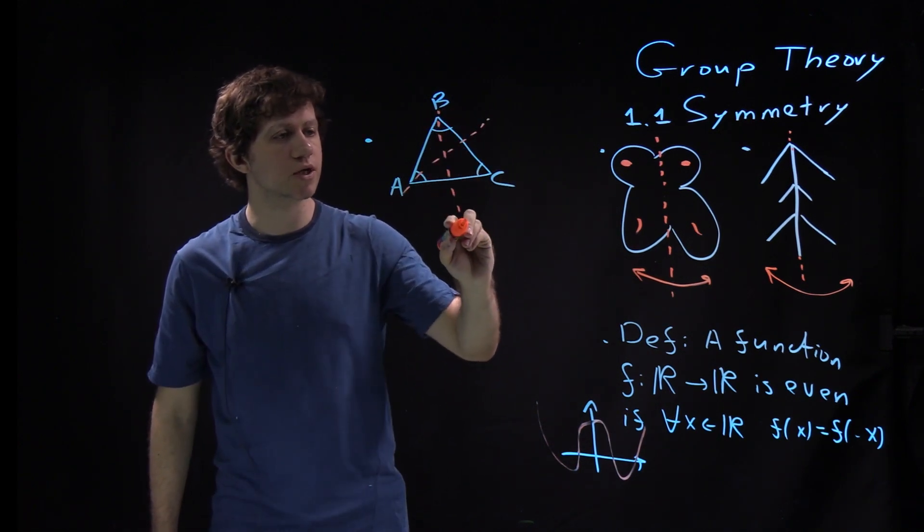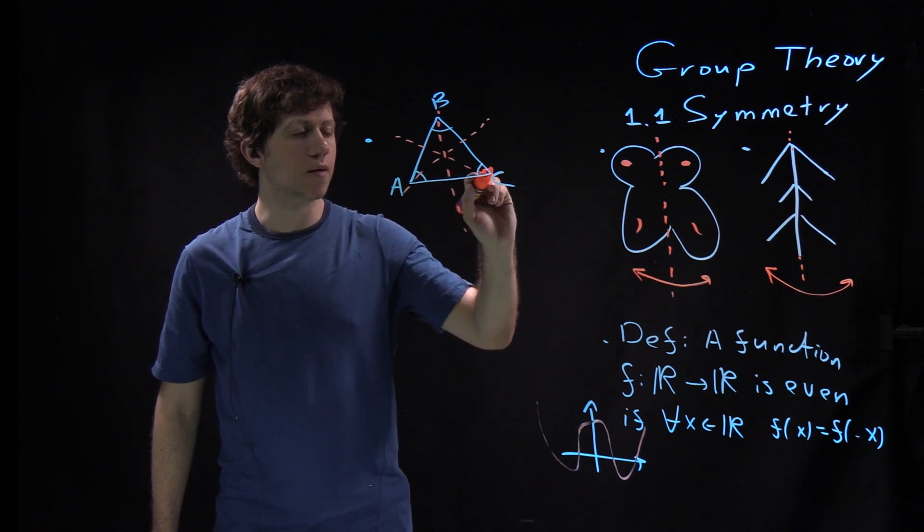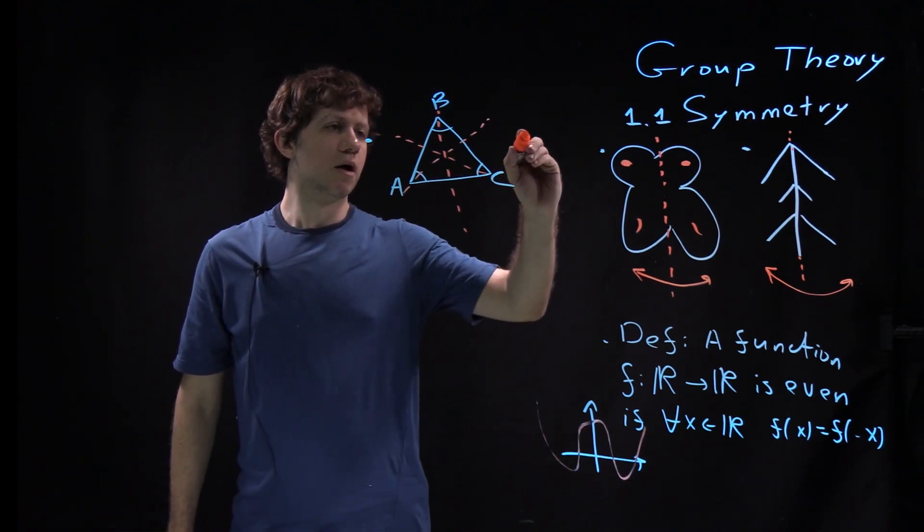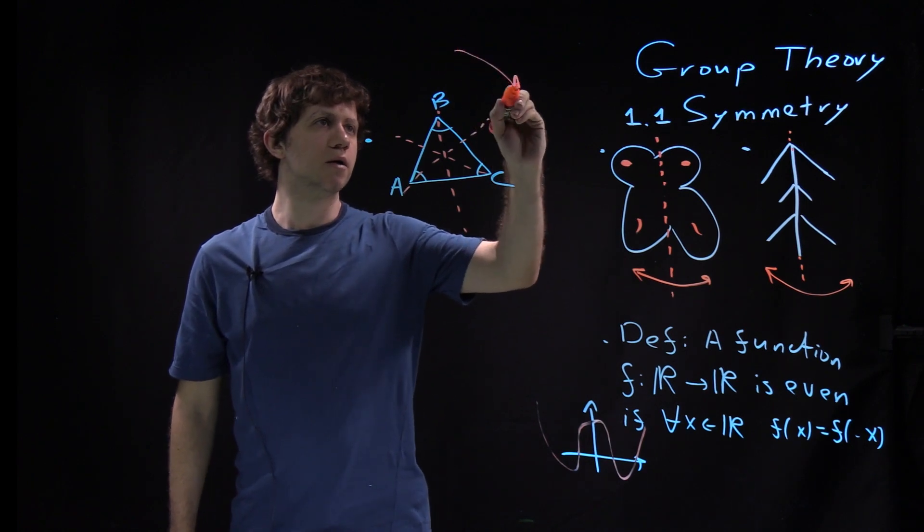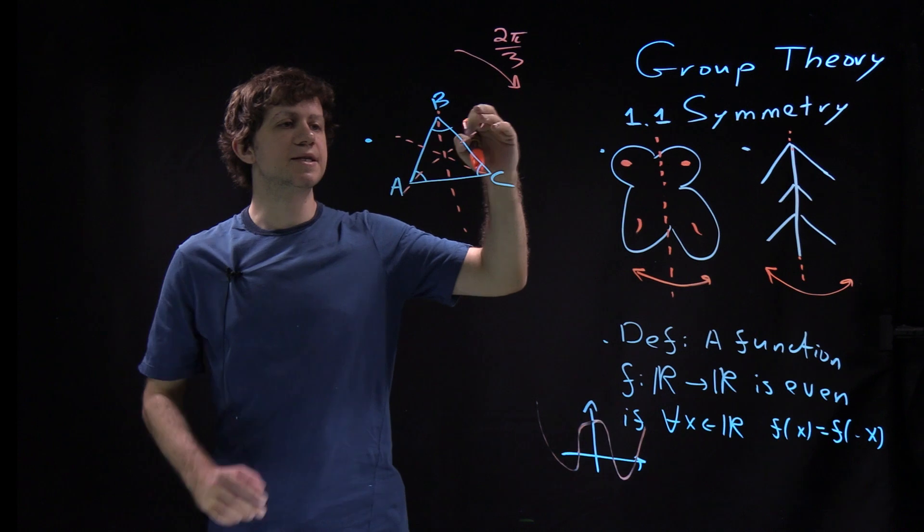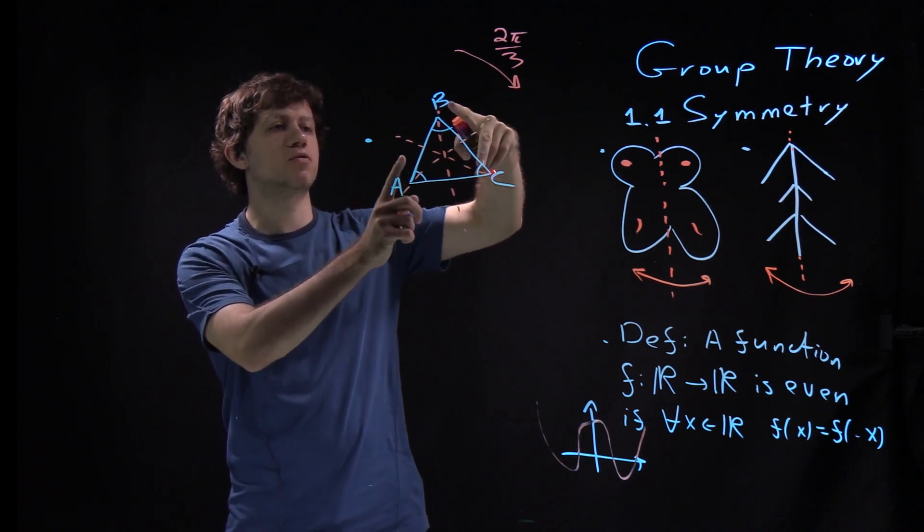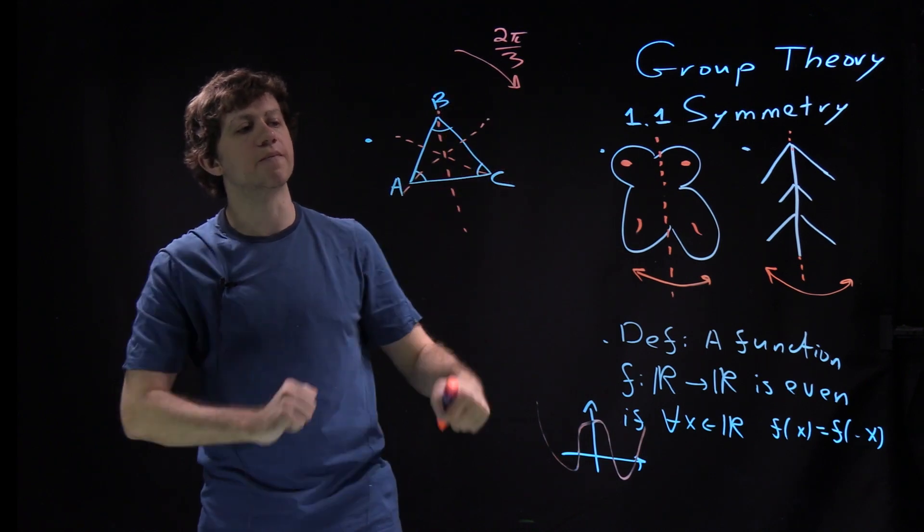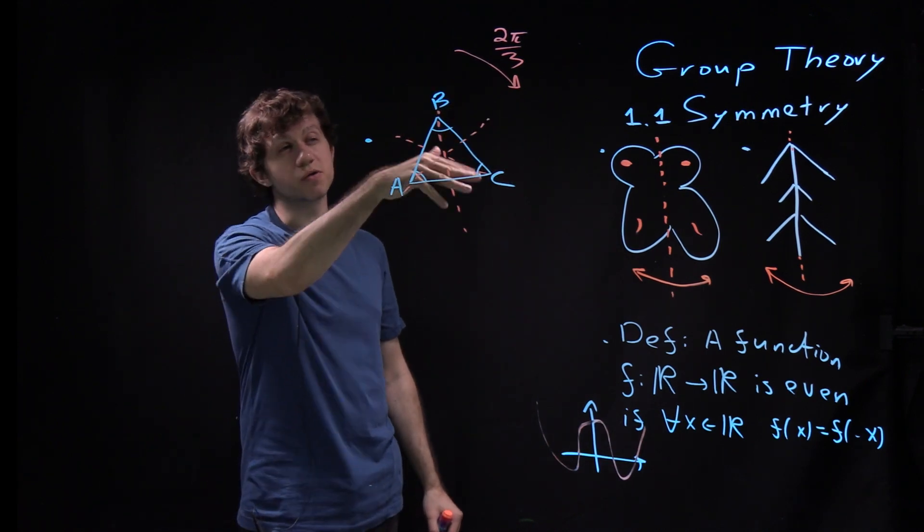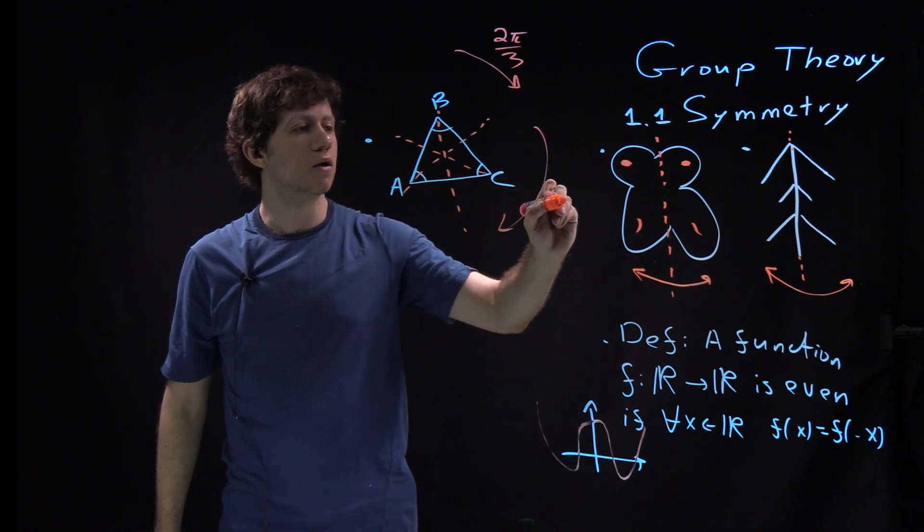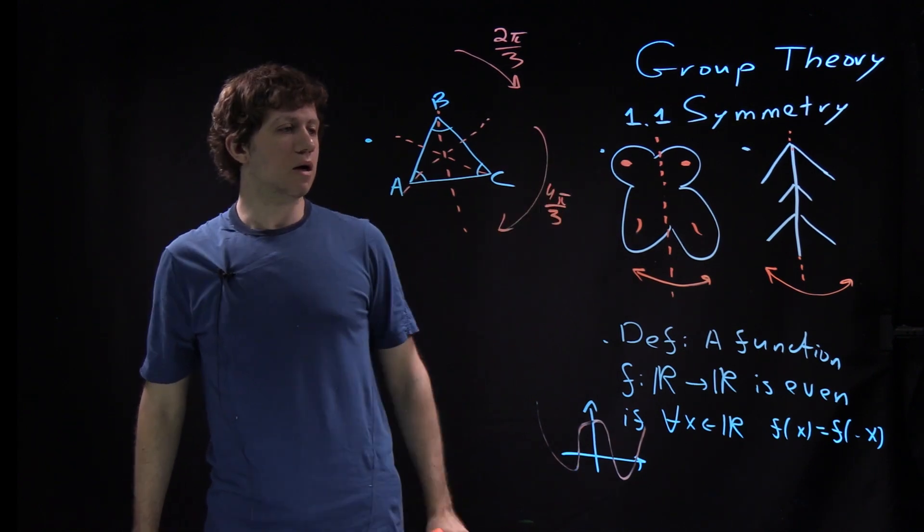It has three axes of symmetry. But also you can rotate it by 2π/3 angle, and that's also a symmetry. Under this symmetry, vertex A will go to B, B goes to C, C goes to A. And also you can do maybe rotation by 4π/3 angle.